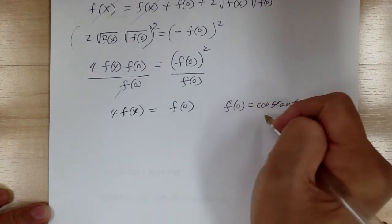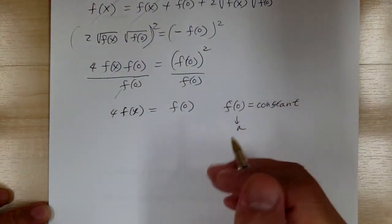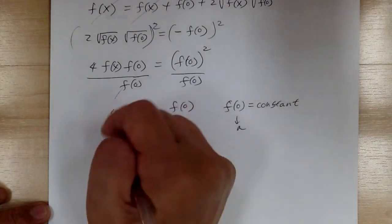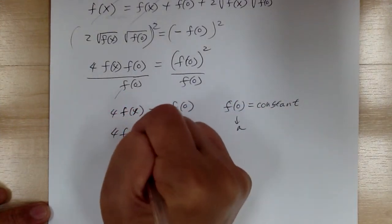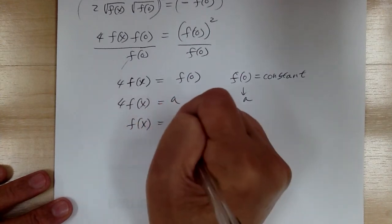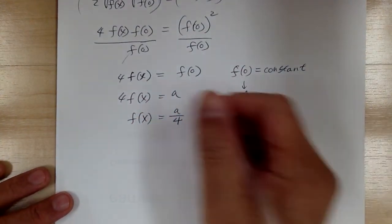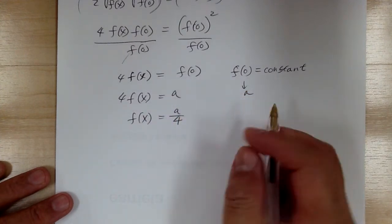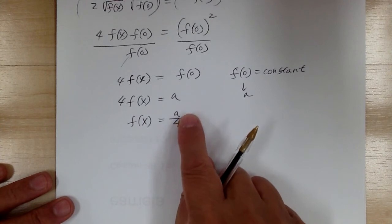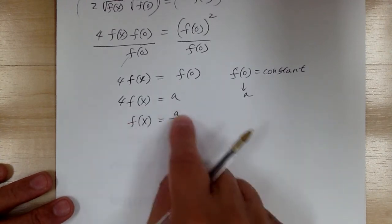Let f of 0 equal to a — you can use c or any variable. So we have 4 times f of x equals a, meaning f of x equals a over 4. But we're not done yet because we still don't know what a is. So we need to solve for a. Once we know a, we can find our final answer.